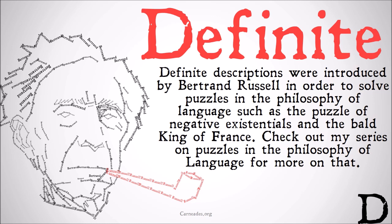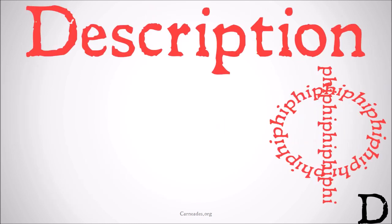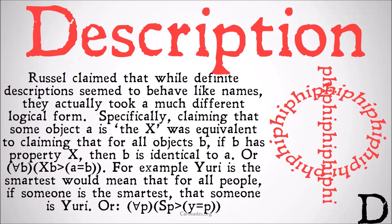Check out my series on puzzles in the philosophy of language for more on that. Russell claimed that while definite descriptions seemed to behave like names, they actually took a much different logical form — specifically claiming that some object A is the X was equivalent to claiming that for all objects B, if B has property X, then B is identical to A.